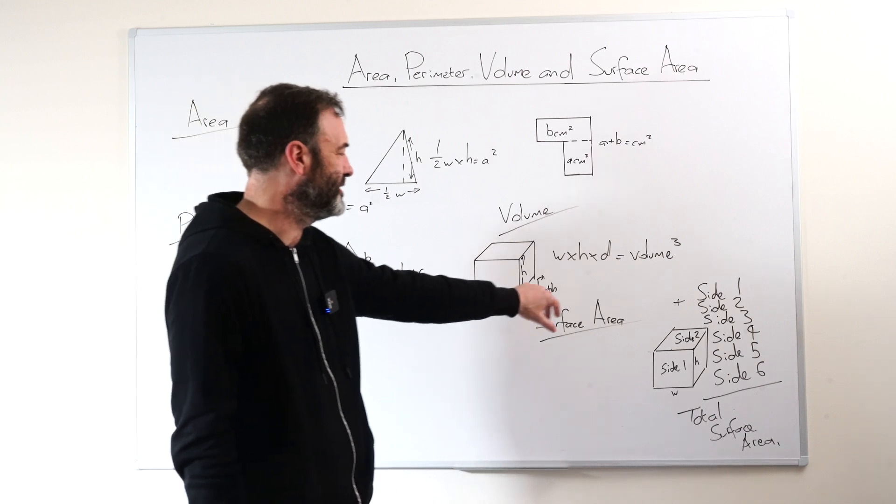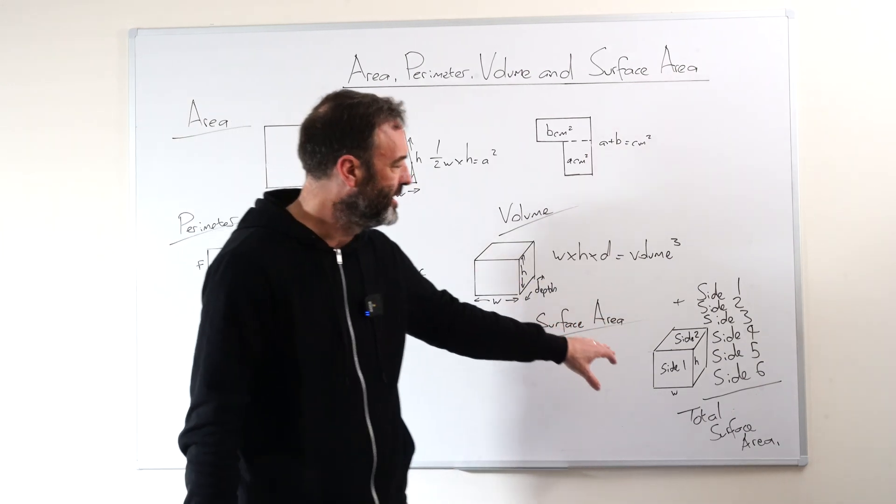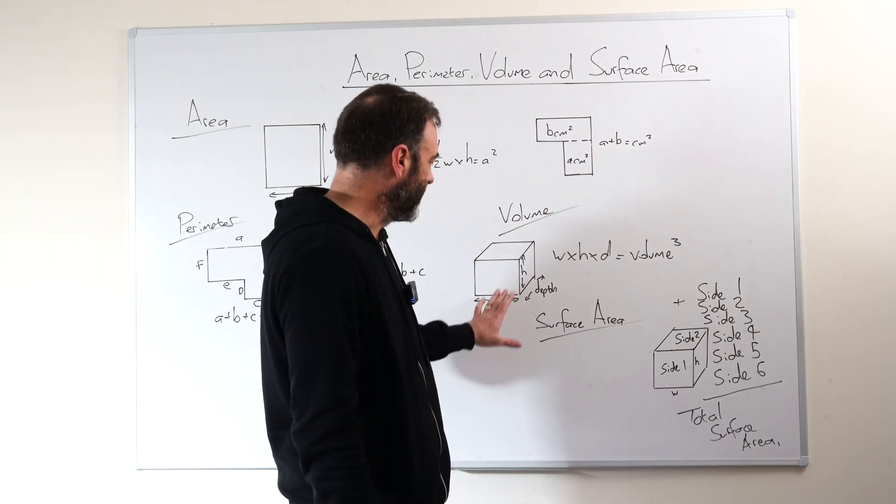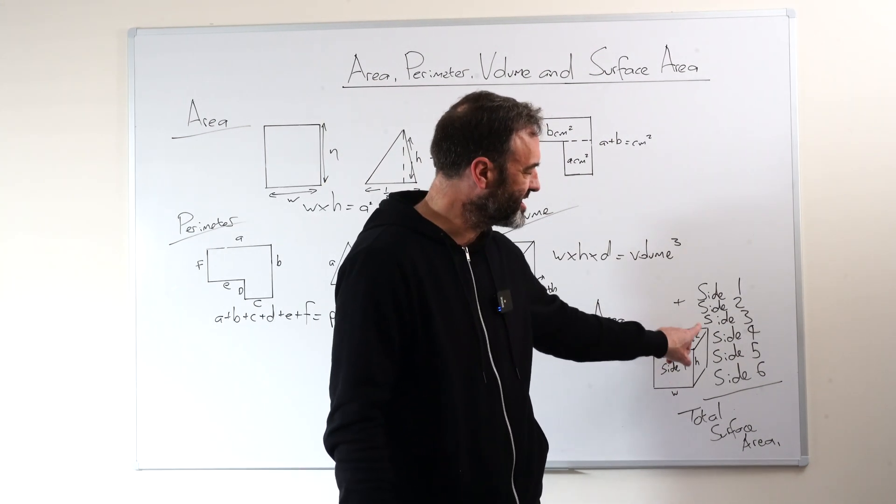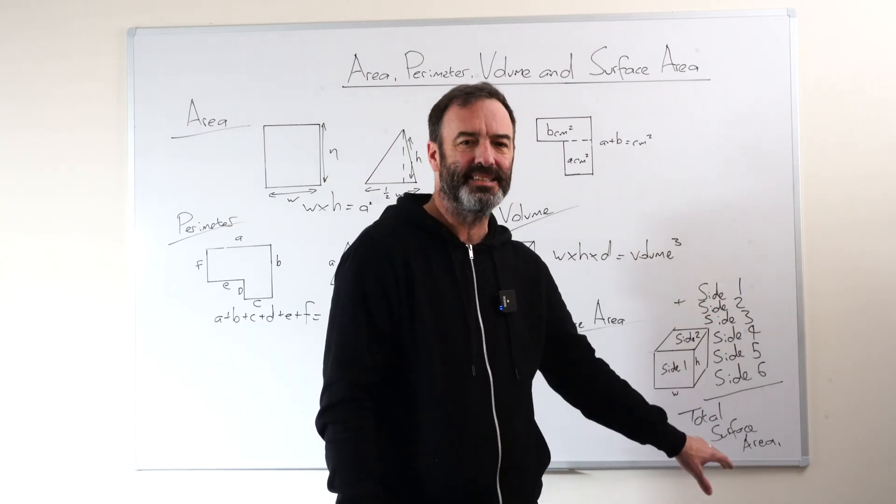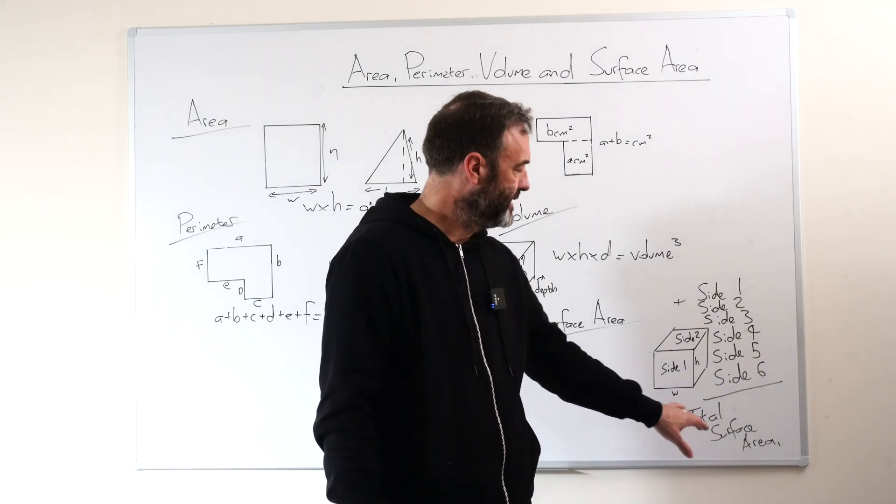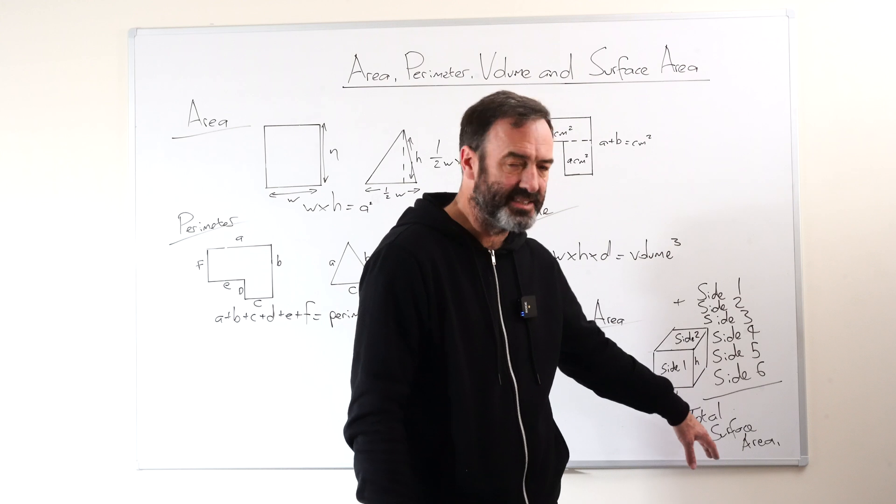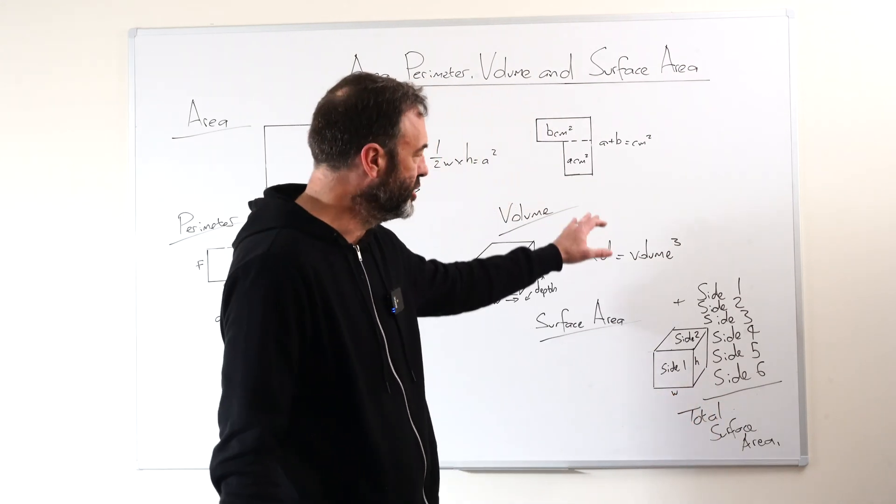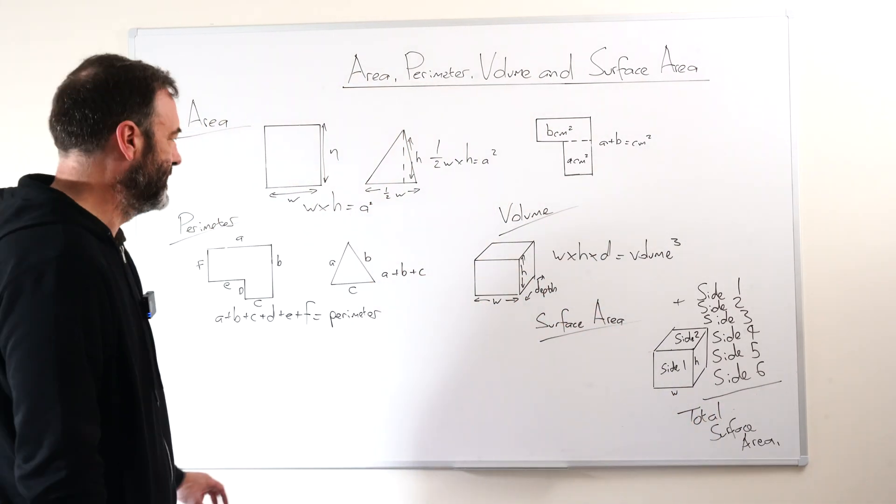If you look at surface area, we're not multiplying height, width, and depth. What we're actually doing is working out the area of each side and then adding them together. And that will be squared because it's just area, surface area. It will not be cubed. So these are very easy concepts.